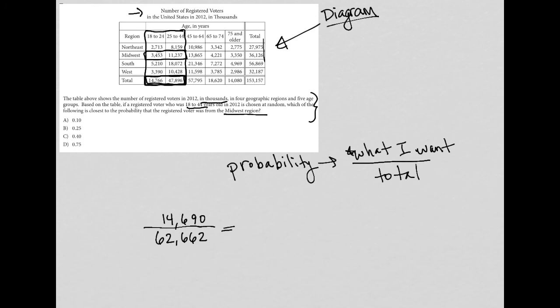So I'm going to take this to my calculator. So 14,690 divided by 62,662. And what I get is 0.2344.